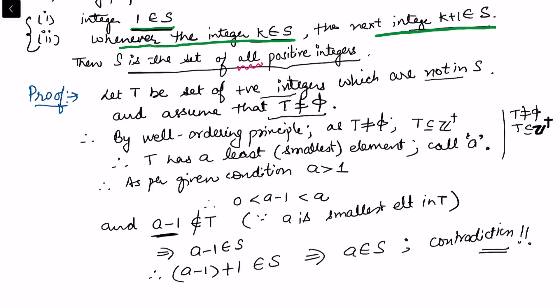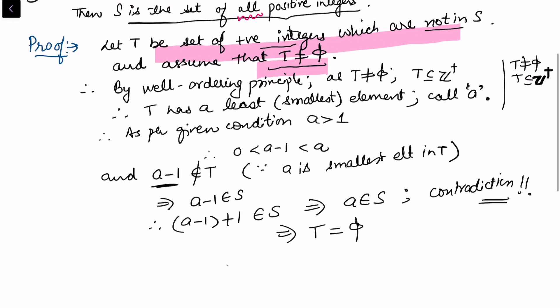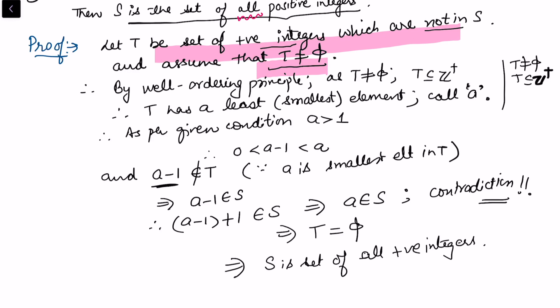This contradiction means our initial assumption that T is non-empty is incorrect. Therefore T must be empty, which automatically implies that S is the set of all positive integers. So the First Principle of Finite Induction follows easily from the Well-Ordering Principle.